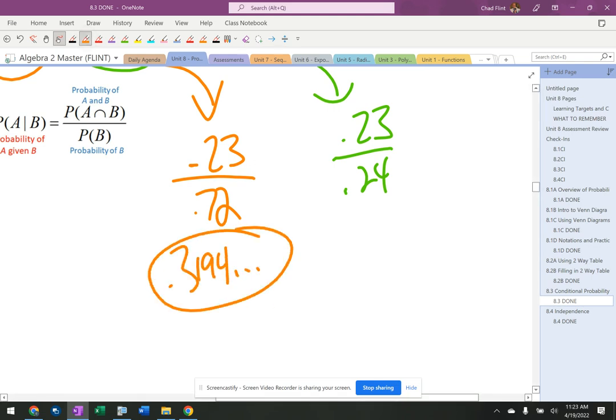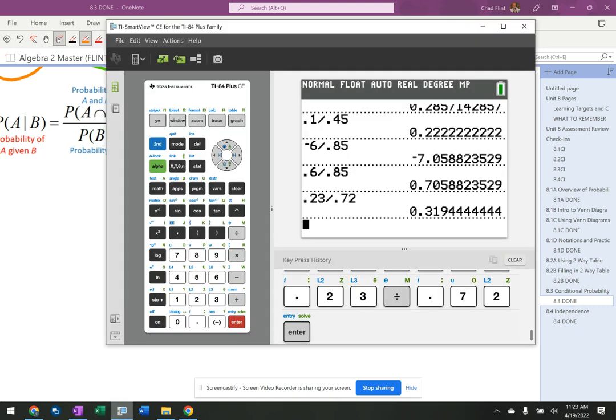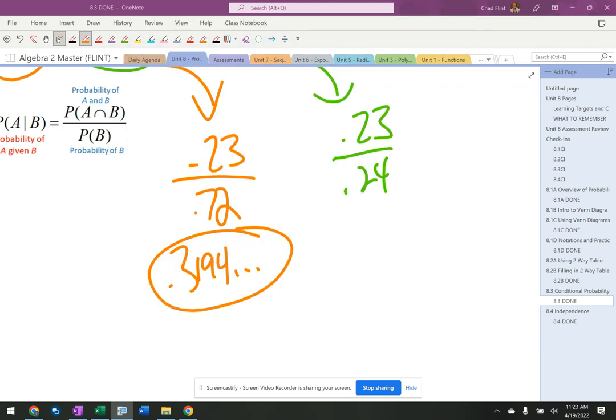And then this other one is actually, that's really close to 1. 0.23 divided by 0.24, 0.9583.